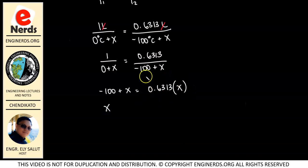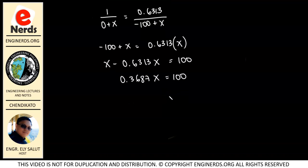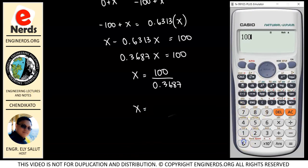We need to isolate X. Transposing the 0.6313X term: X minus 0.6313X equals 100, giving us 0.3687X equals 100. Dividing both sides by 0.3687, we get X equals 100 divided by 0.3687. Using a calculator: 100 divided by 0.3687 gives us X equals 271.22.